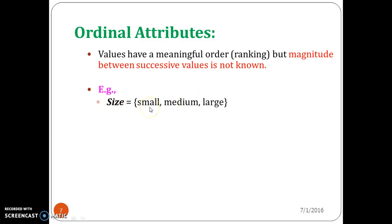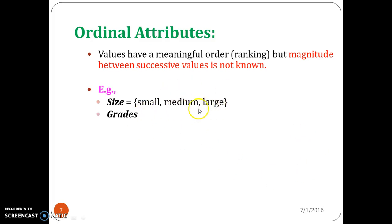The size of anything can be small, medium, or large — three different sets available for size. You can rank these from small to medium and medium to large: first is small, then medium, then large. But you cannot calculate the successive difference between small and medium or medium and large.